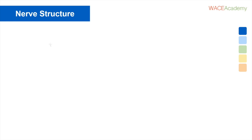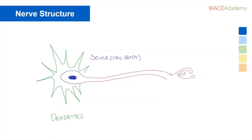So let's quickly review the structure of a nerve cell. Remember that a nerve cell has three main parts: the dendrites, the cell body, and the axon.